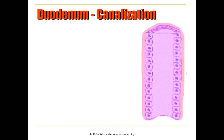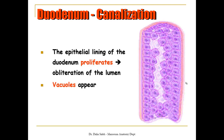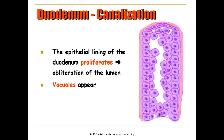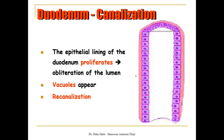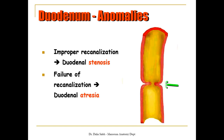Like any other tube, its epithelial lining will proliferate to obliterate the lumen completely, and then vacuoles appear. Then re-canalization takes place again. If there is alteration in this process, this will lead to duodenal stenosis. Failure of re-canalization will lead to duodenal atresia.